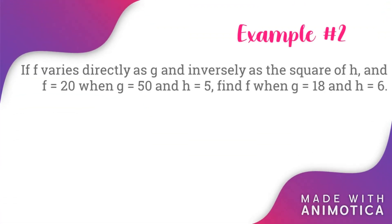Example number two: if f varies directly as g and inversely as the square of h, and f is equal to 20 when g is equal to 50 and h is equal to 5, find f when g is equal to 18 and h is equal to 6. We will repeat all the steps from before. Step number one: write the correct equation. From y is equal to kx over z, the equation is now f is equal to kg all over h squared.